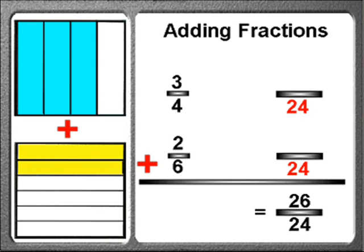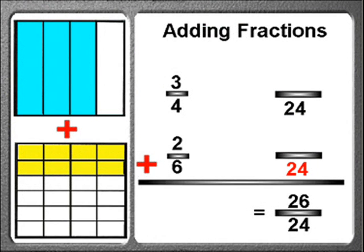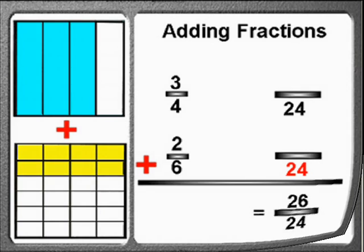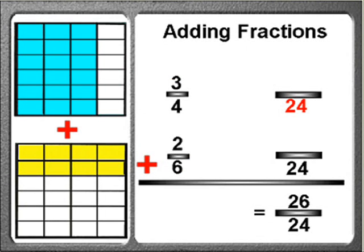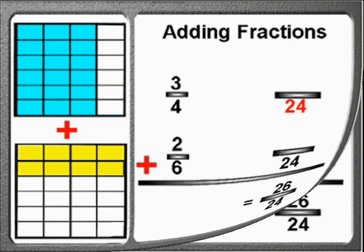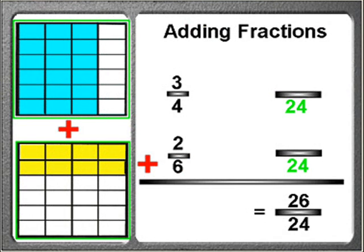The number twenty-four will then be put to the right of the two other fractions and will serve as a new common denominator for each of the separate fractions of three-fourths and two-sixths so that they can be converted into them. What we are basically doing is converting the fraction two-sixths into an equivalent fraction that has twenty-four as its denominator, and also converting three-fourths into its own matching equivalent fraction which also has twenty-four as its denominator. It is only when both fractions have matching denominators that we will be able to add them.